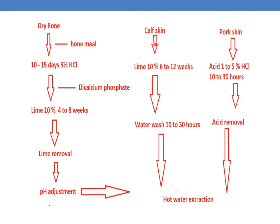When calf skin is used, it is subjected to alkalization — treated with 10% lime for 6 to 12 weeks. When calf skin is used, it is directly treated with lime, without the initial acid treatment required for dry bone. Then it is subjected to a water wash for 10 to 30 hours, and then sent for hot water extraction.